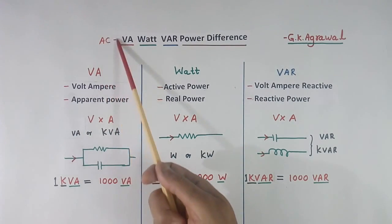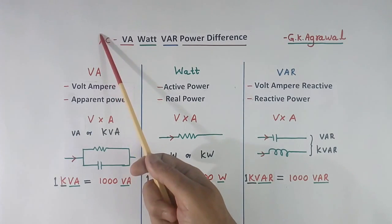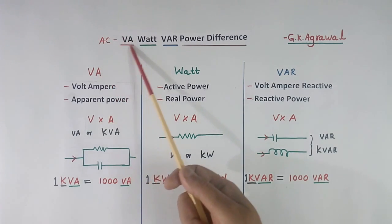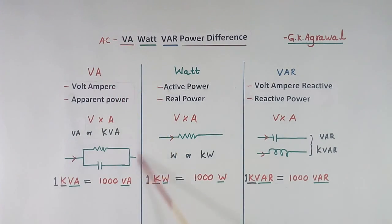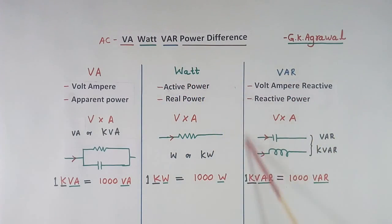Here, AC is written because these powers are applicable for AC source. This VA details are here, Watt details are here, and VAR details are here.